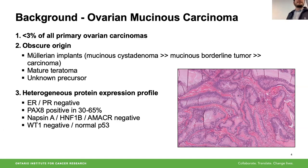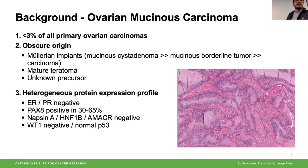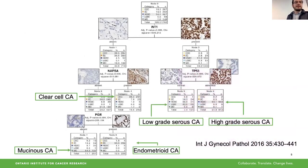That contrasts with the vast knowledge we now have about the origin of more common types of ovarian cancer. High-grade serous carcinoma mostly arises in the fallopian tube, and the second most common types — endometrioid and clear cell — arise in endometriosis. We have not been able to identify a clear-cut precursor for ovarian mucinous carcinoma.